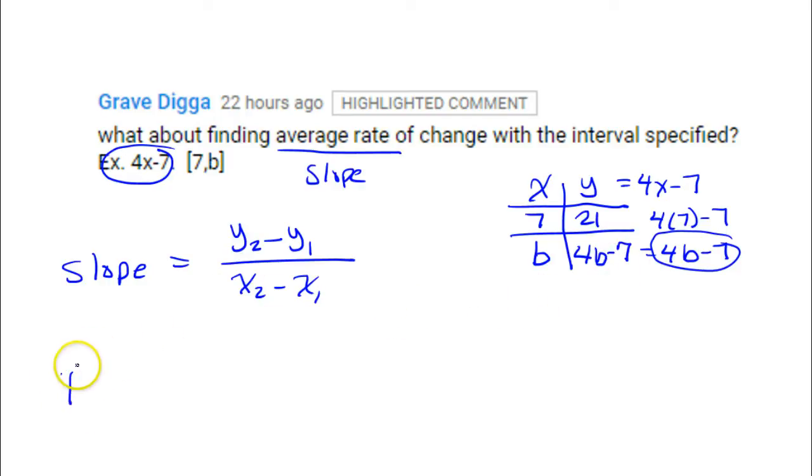So when we go to do the slope, and I'll go back to calling it rate of change, but same thing. We need to do y minus y. So that would be 4b minus 7. That's the first y minus the other y, which is minus 21, over x minus x, which would be b minus 7.